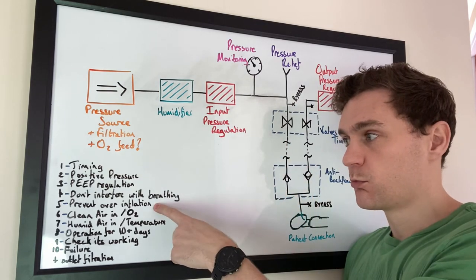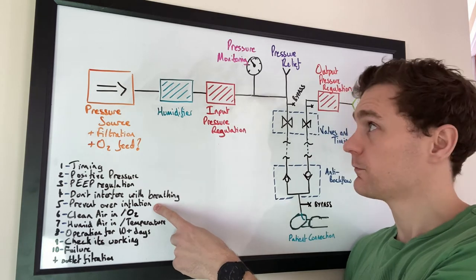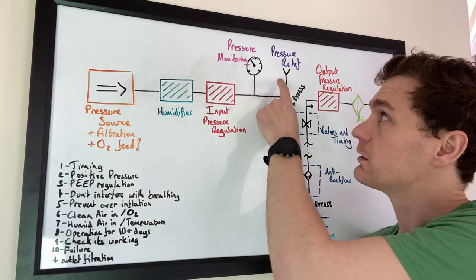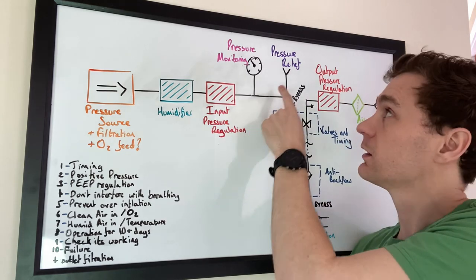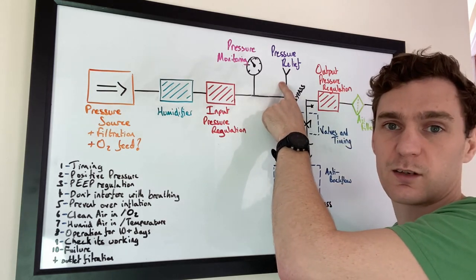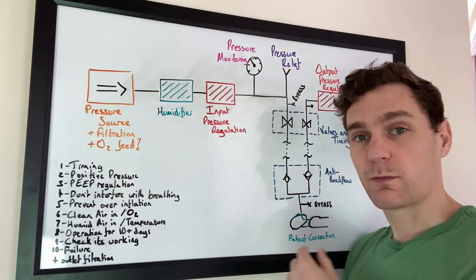Number five, prevent over inflation. Again, these three are pivotal. So the clinician sets the right pressure, the clinician can monitor the pressure, and there's a pressure relief which is going to prevent catastrophic damage if something goes wrong.